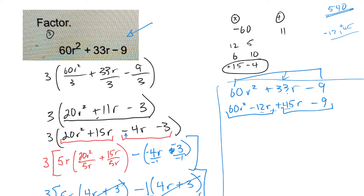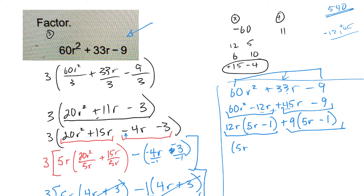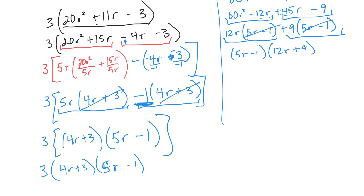Now I group factor. From the first group I take out 12R, leaving 5R minus 1. From the second group I take out 9, also leaving 5R minus 1. Both terms share 5R minus 1, so I factor that out and I'm left with 12R plus 9 in the remaining bracket. But there's still a common factor of 3 in that bracket, so I take the 3 out, leaving 4R plus 3. Writing the constant out front: 3 times (5R minus 1) times (4R plus 3).